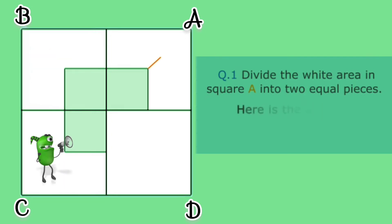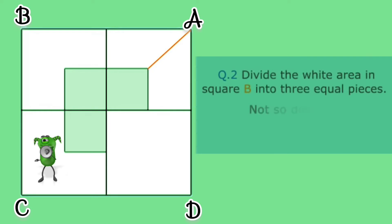Here is the answer. Question number two: divide the white area in square B into three equal pieces. Not so difficult. Here is the answer.